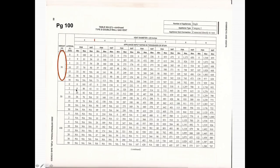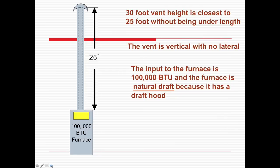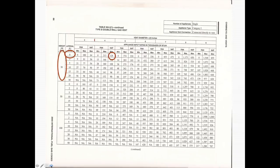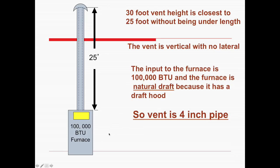Here's the page. We have a 30-foot height, no lateral, so the lateral is zero. The input of the furnace is 100,000 BTUs and the furnace is natural draft because it has a draft hood. Going across to find the one that will work — we have fan minimum and maximum, and natural. On three-inch pipe it won't work, it's too small at 64,000. Going to four-inch we have 128,000. So we end up with a four-inch vent pipe.